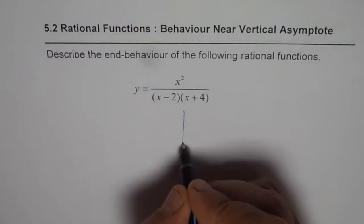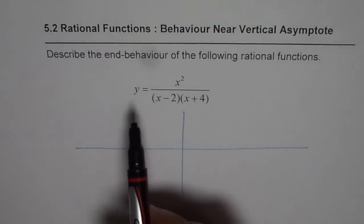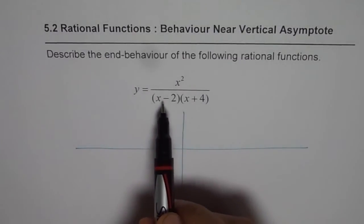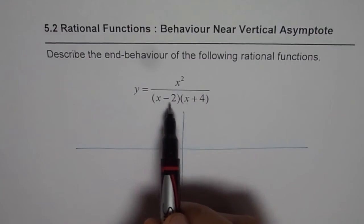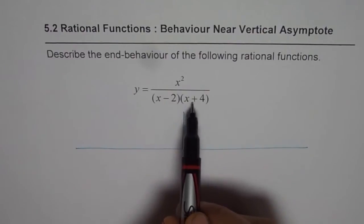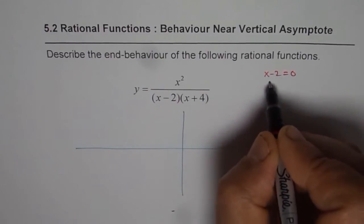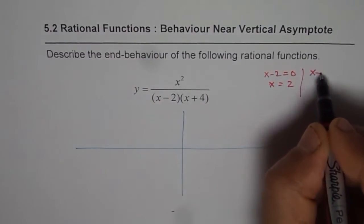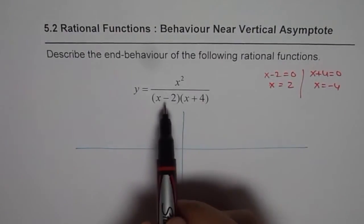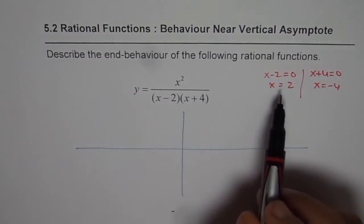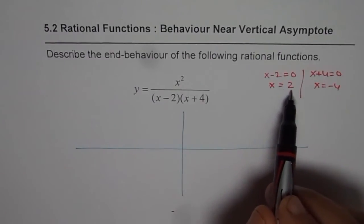Let me make a rough sketch first. Generally speaking, whenever we have a rational function, the denominator can be equated to zero and those values are not in the domain. At those points we may have a hole or a vertical asymptote. In this case, x minus 2 equals zero gives x equals 2, and x plus 4 equals zero gives x equals minus 4. Since we don't have any canceling factors, at x equals 2 and x equals minus 4 we have vertical asymptotes.